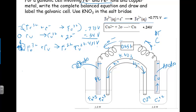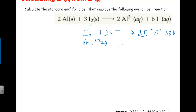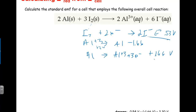Quick multiple-choice style problem: calculate the EMF for a cell using I₂ + 2e⁻ → 2I⁻ (E-naught = +0.53 V) and Al³⁺ + 3e⁻ → Al (E-naught = −1.66 V). Flipping the aluminum half-reaction: Al → Al³⁺ + 3e⁻ becomes +1.66 V. Adding: 0.53 + 1.66 = 2.19 V ≈ 2.20 V.